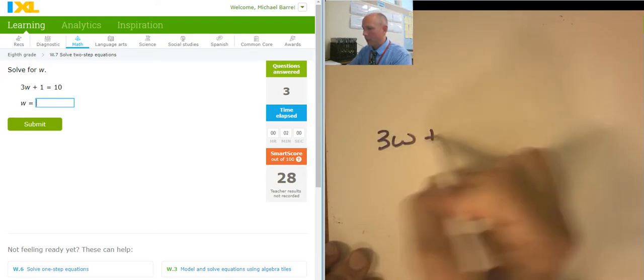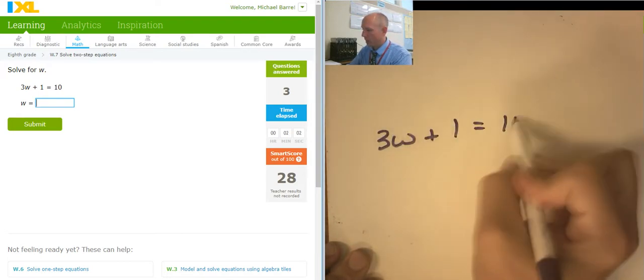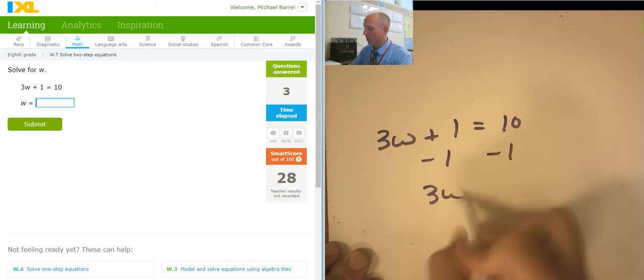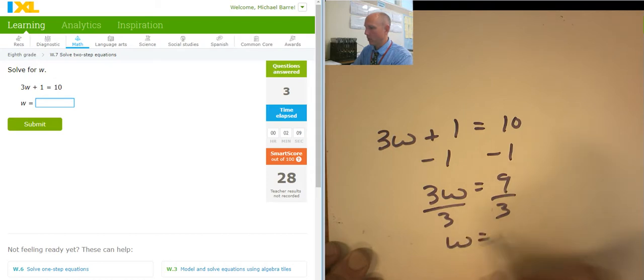3w plus 1 equals 10. I would like to subtract 1 from both sides. 3w equals 9. I would like to divide both sides by 3. w equals 3.